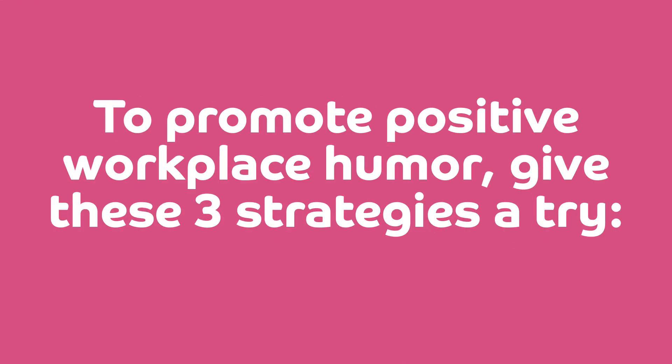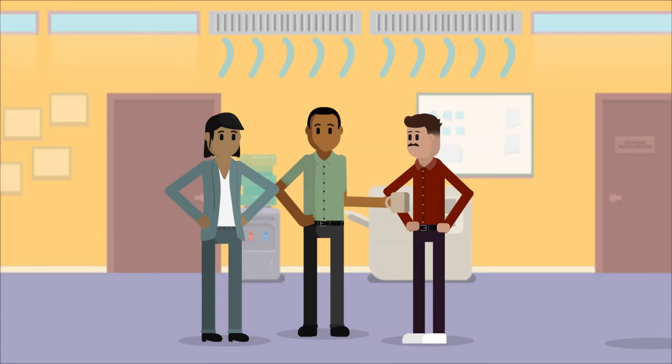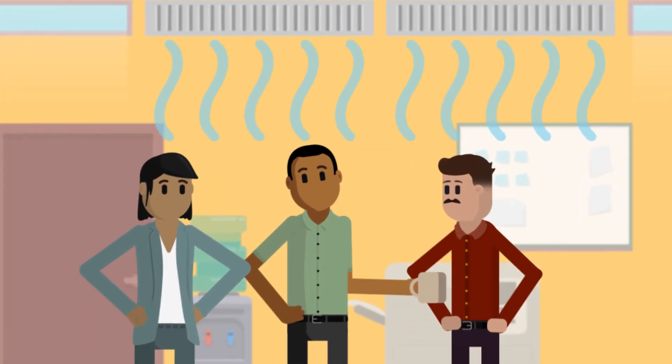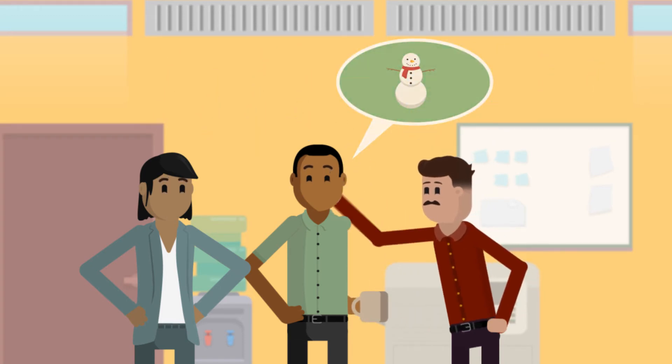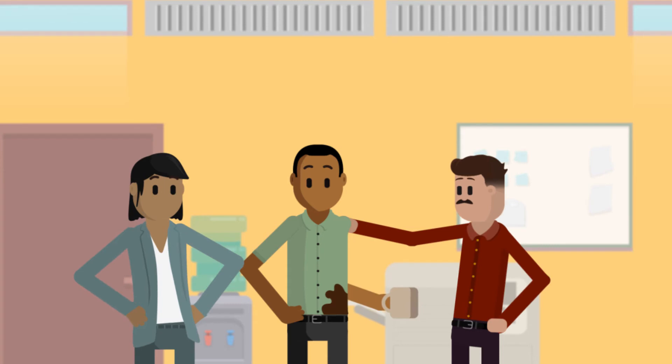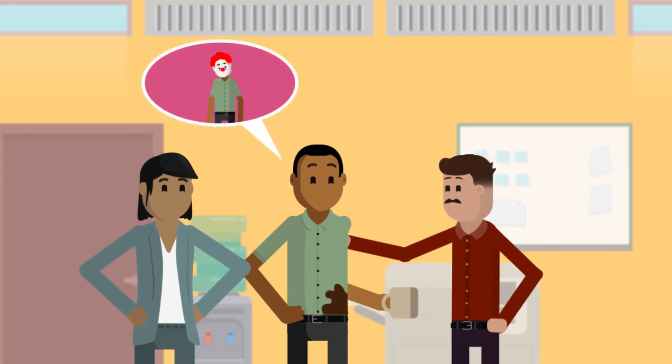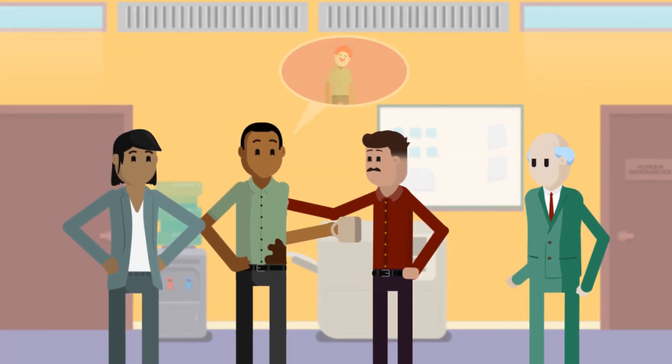To promote positive workplace humor, give these three strategies a try. Joke about situations affecting you and all your coworkers, such as excessive air conditioning. Take a friendly jab at yourself from time to time. Know your audience—jokes you tell your peers may not be as well received by your manager.